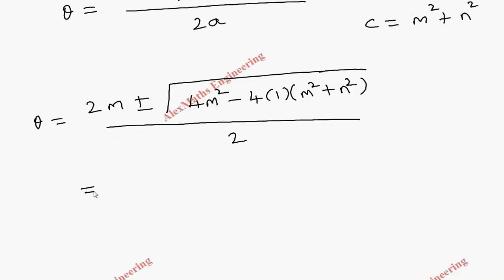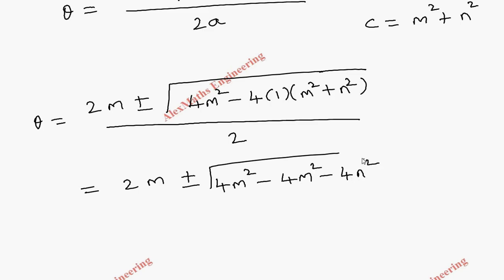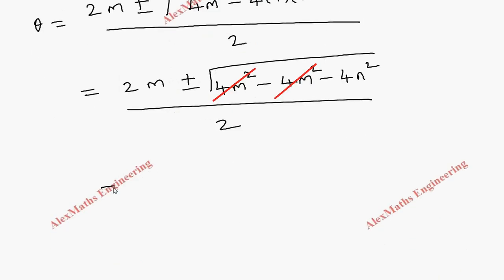By substitution, theta equals minus b which is 2m, plus or minus root of 4m squared minus 4ac, where c is m squared plus n squared, whole divided by 2. We can cancel 4m squared minus 4m squared inside the square root. There is a negative term remaining inside the square root, so when we take the square root it becomes i times root of 4n squared, which is 2n. Dividing by 2 we get m plus or minus i n.